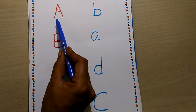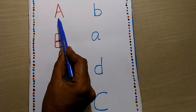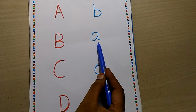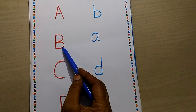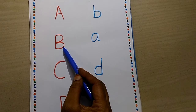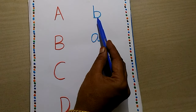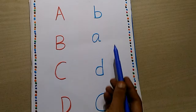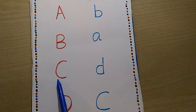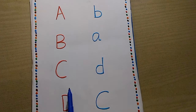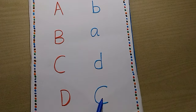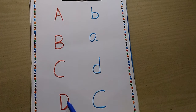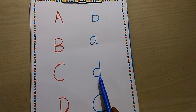Capital A, small a. Capital B, small b. Capital C, small c. Capital D, small d.